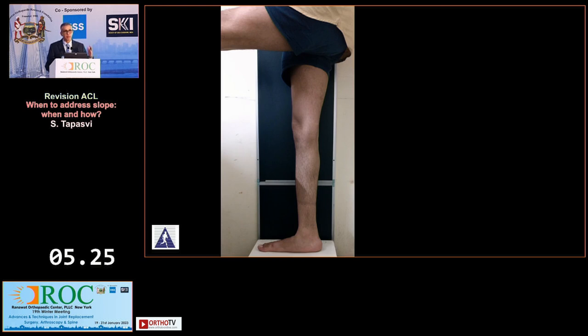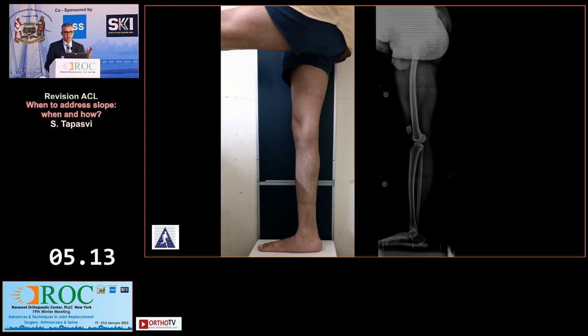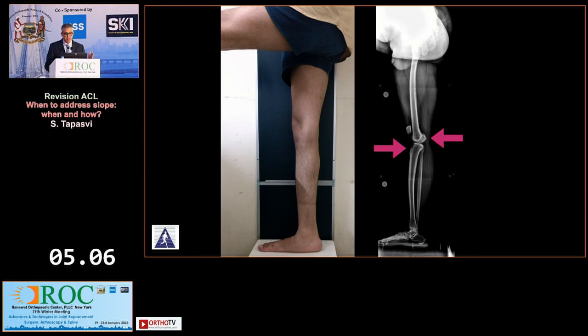To calculate tibial slope, you first need to take a proper x-ray. The patient stands on the affected leg with the patella facing front; the opposite limb is flexed at about 90 degrees at the hip and knee and rested on a stool. You need perfect overlapping of the posterior femoral condyles as well as the tibial condyles, and you absolutely need a marker on the x-ray — something many centers forget to add, which makes measurements impossible.